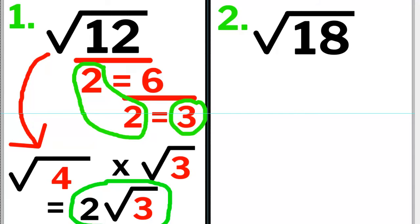Let's do problem number 2, square root of 18. 18 is an even number, so divide it by 2. 18 divided by 2 equals 9.